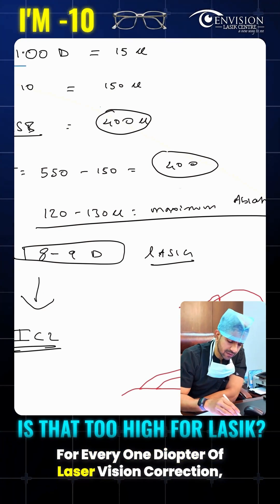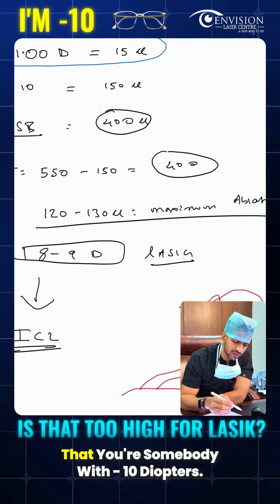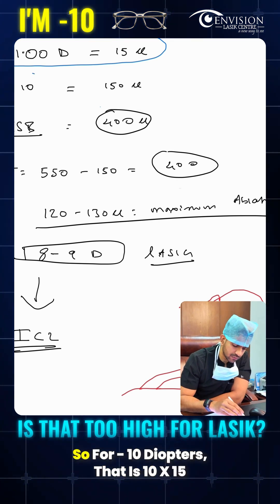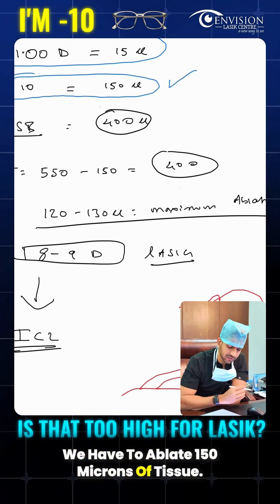For every one diopter of laser vision correction, we have to remove 15 microns of tissue. Now let's assume you're somebody with minus 10 diopters. So for minus 10 diopters, that is 10 into 15, we have to ablate 150 microns of tissue.